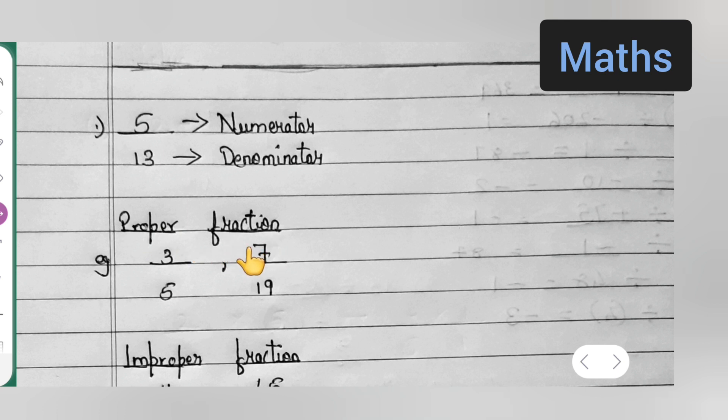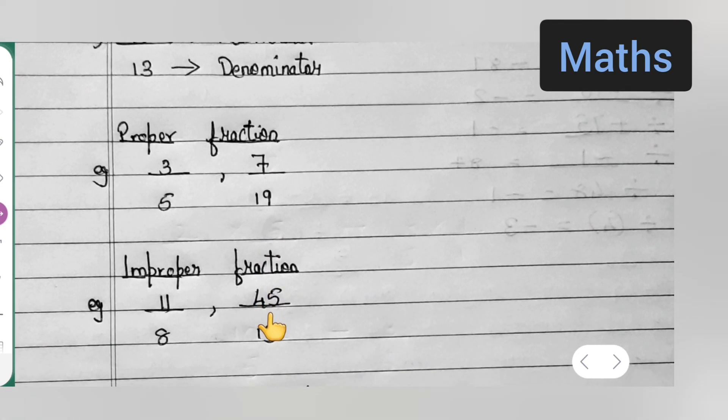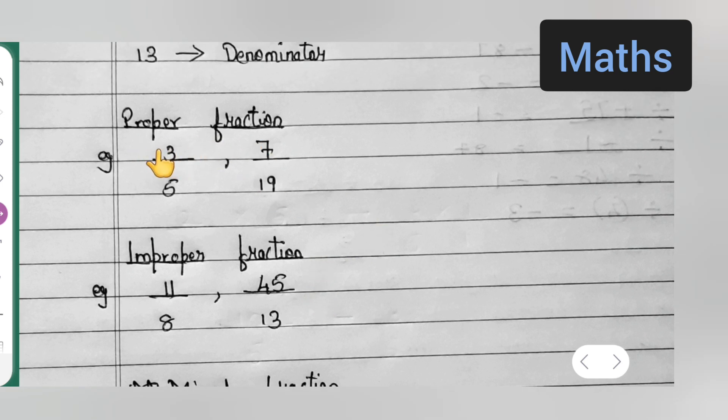Proper fraction example is 3 upon 5 and 7 upon 19. They are the proper fractions. Then improper fractions, like here what happens in proper fraction, the smaller number will come up as the numerator and denominator will be the bigger one.